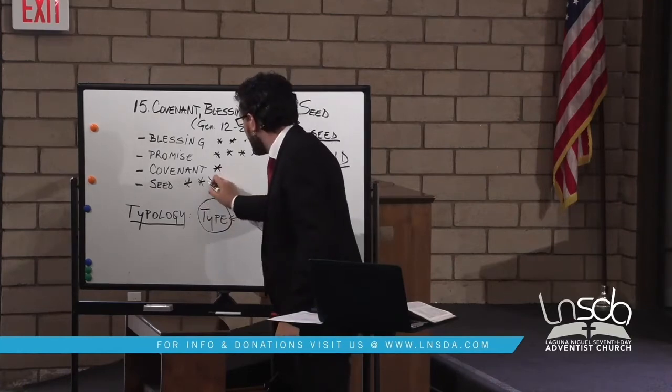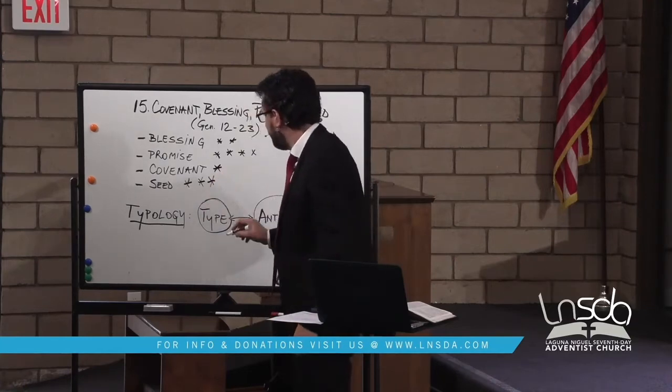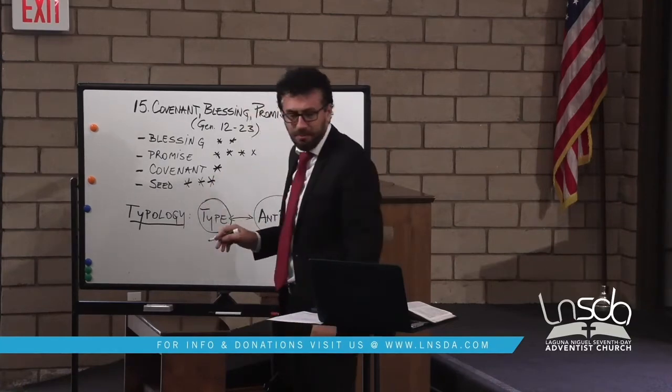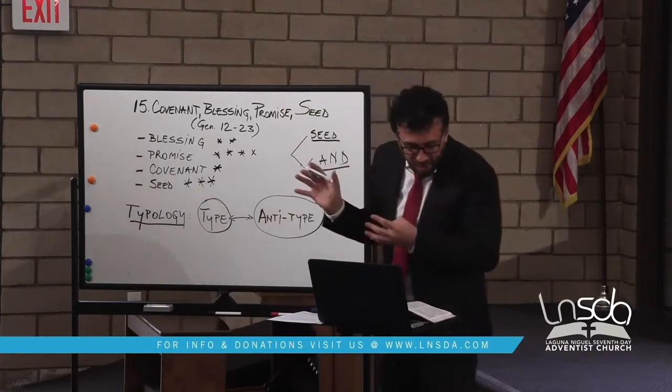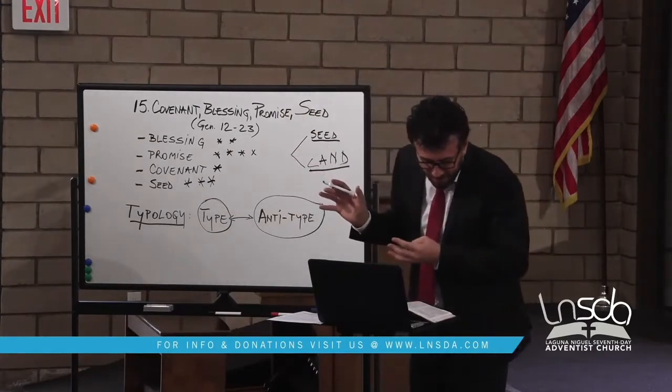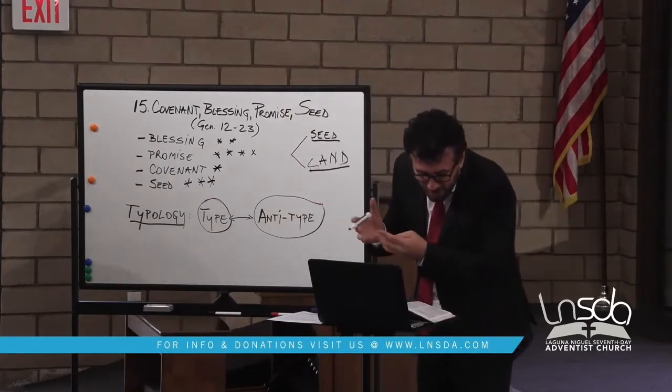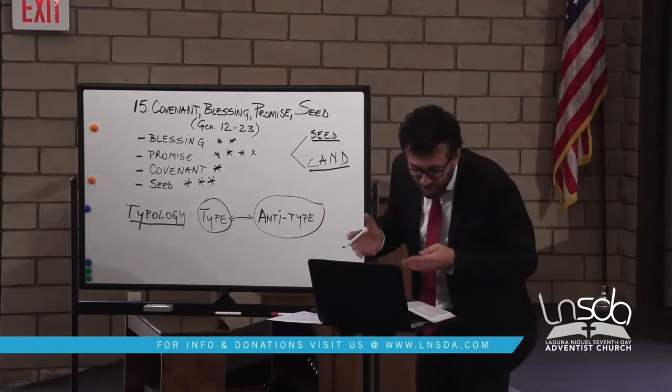Jumping to verse 18: 'On the same day, the Lord made a covenant with Abraham, saying, To your descendants I have given this land from the river of Egypt to the great river Euphrates.' This is a critical moment. God reiterates the promise — seed plus land. And this is the first time the word covenant appears in the text. Here God cuts the covenant, the animals are cut in the middle, and God enters into covenant officially with Abraham. Something is clearly being built.